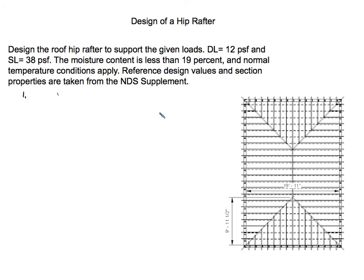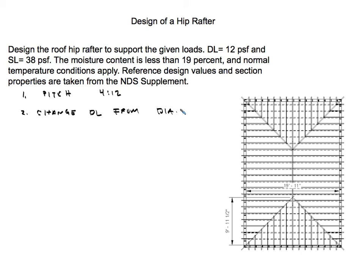The first thing you need to know is the pitch of the roof. The pitch of this roof is 4 to 12. With that, you can convert the dead load from a diagonal projection into a horizontal projection — I covered that in the designing a gable roof video. The second step is to change the dead load from a diagonal projection to a horizontal projection using the pitch.